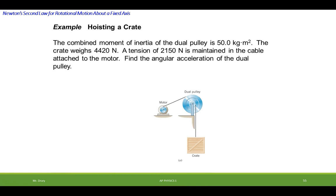Alright, so let's try a problem. This one's a little complicated, so it might take a couple minutes to get through it. Combined moment of inertia of a dual pulley is 50 kilogram meters squared. So kilogram meters squared are the units of moments of inertia. The crate has a weight of 4420 newtons. A tension of 2150 newtons is maintained in the cable that is attached to the motor. Find the angular acceleration of the dual pulley.